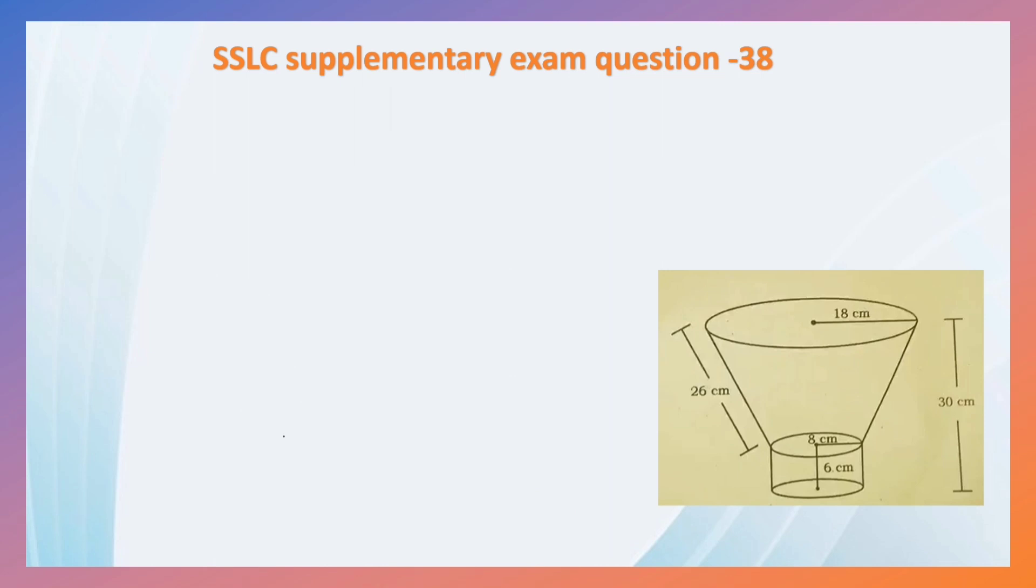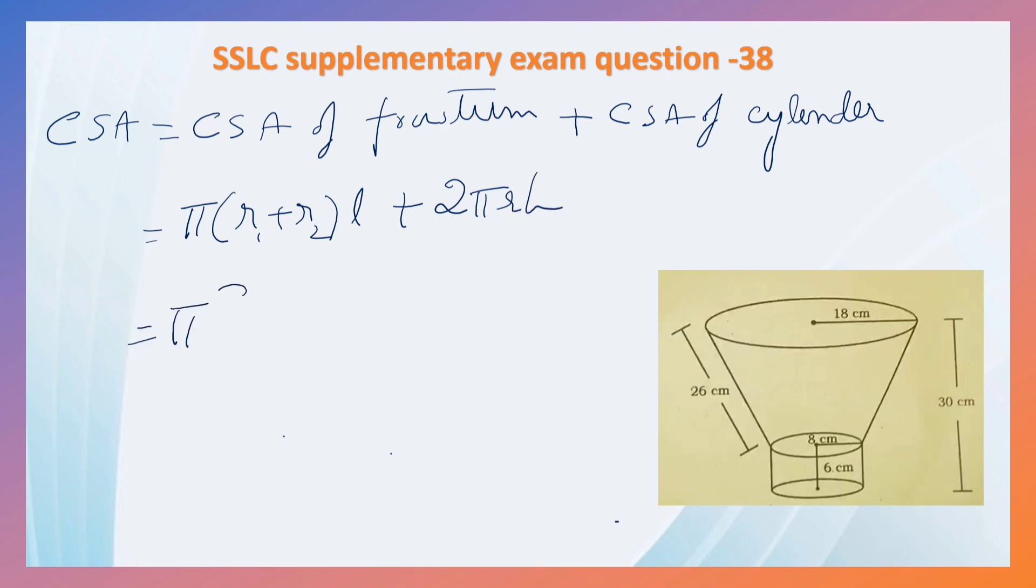Now, curved surface area of entire solid is equal to CSA of frustum of cone plus CSA of cylinder. CSA of frustum of cone formula pi, R1 plus R2 into L. CSA of cylinder 2 pi RH. Here pi is common, R1 plus R2 into L plus 2 RH.